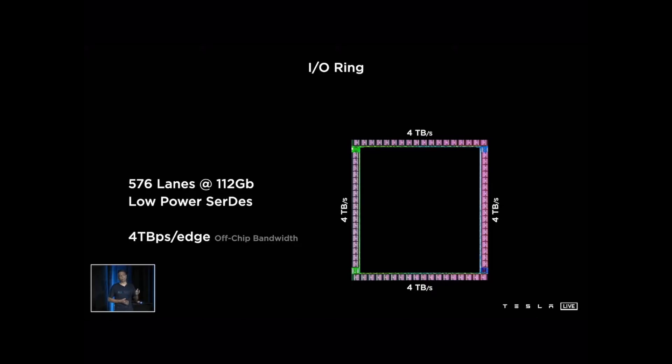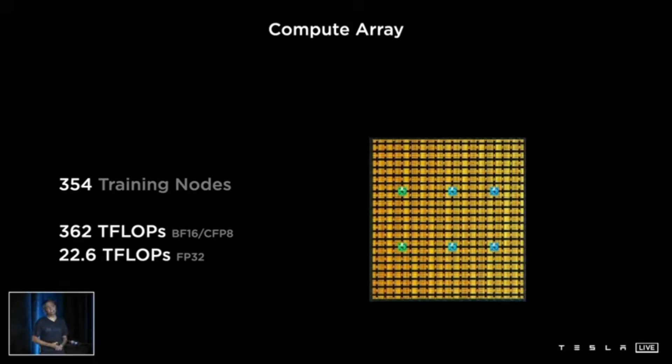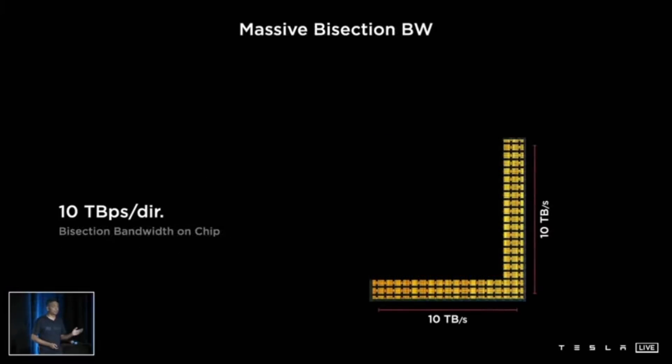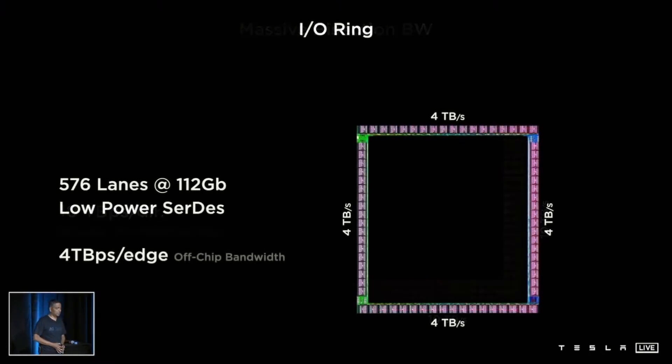This is more than two times the bandwidth coming out of the state-of-the-art networking switch chips which are out there today. And network switch chips are supposed to be the gold standards for IO bandwidth. And this chip is, of course, purposely made for pure machine learning machines—no silicon and so on, purposely built for this task.